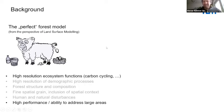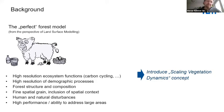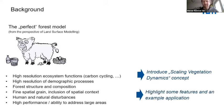This is clearly unrealistic, and most models usually concentrate on two parts: high resolution in functions and high performance sufficient to be applied at large scales. One different approach I'd like to introduce here is called the Scaling Vegetation Dynamics concept — something developed at TU Munich. I'd like to highlight some of its features and show results from an example application.